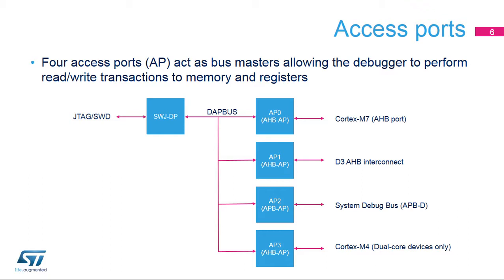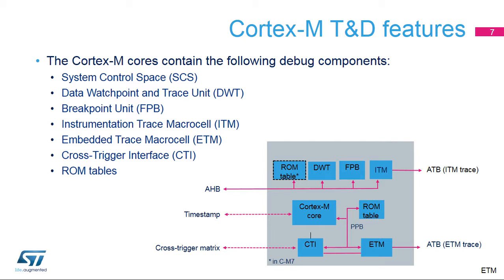AP0 allows access to the debug and trace features integrated in the Cortex-M7 processor core via an AHB light bus connected to the AHB-D port of the processor. AP1 allows access to the AHB bus matrix in the D3 domain, giving visibility of the D3 domain memory and peripherals when the D1 and D2 domains are switched off. AP2 allows access to the debug and trace features on the system APB debug bus — all components not included in one of the processor cores. AP3, dual-core devices only, allows access to the debug and trace features integrated in the Cortex-M4 processor core via its internal AHB bus.